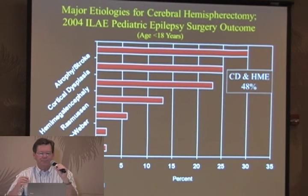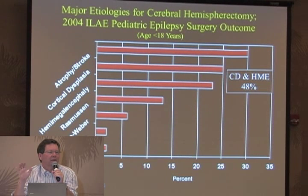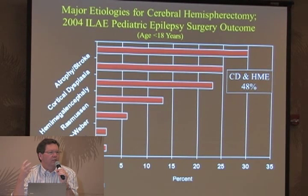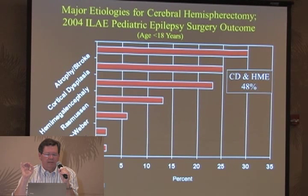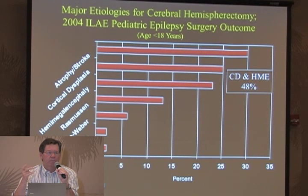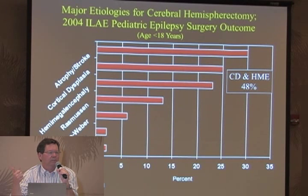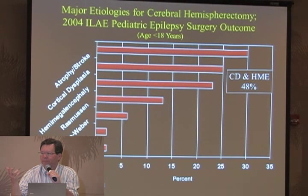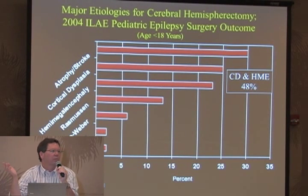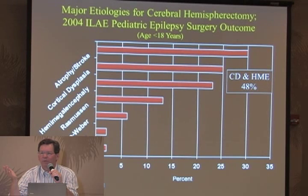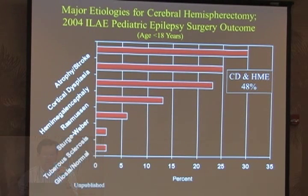As far as etiologies are concerned, you have to decide how you want to split or combine categories. Etiologies such as stroke or infections - atrophic etiologies - constitute about 30%. Cortical dysplasia not including hemimegalencephaly is the next group, followed by hemimegalencephaly. If you combine the two dysplastic etiologies - cortical dysplasia and hemimegalencephaly - it equals almost half. So looking around this room, about half are some sort of cortical dysgenesis. Rasmussen's is next, followed by Sturge-Weber, tuberous sclerosis, and a few cases with unclear etiologies.